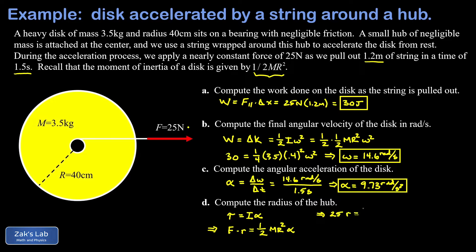So I have 25R is equal to one half times the mass of the disk, that was 3.5 kilograms times its radius squared, 0.4 squared times the angular acceleration alpha, which we computed was 9.73 radians per second squared. And when I run the numbers on this, I get that R is 0.109 meters, which might be nicer to express in centimeters as 10.9 centimeters. And we're done.